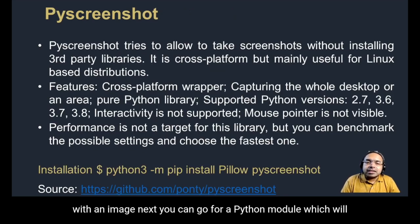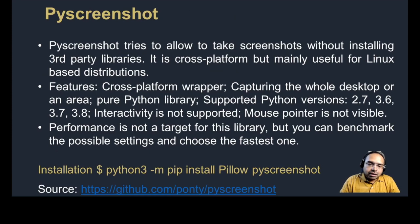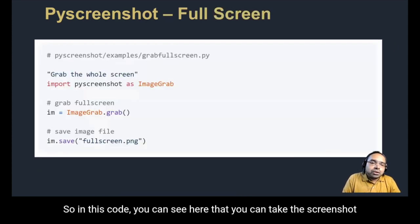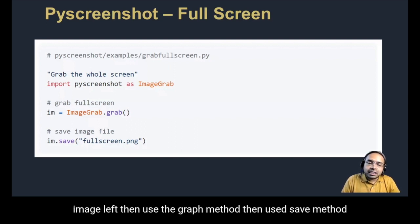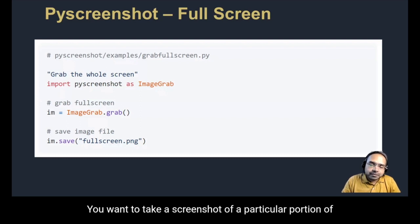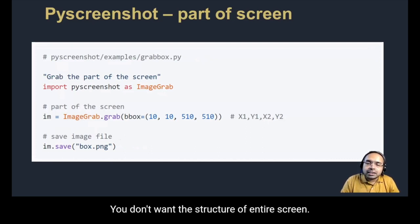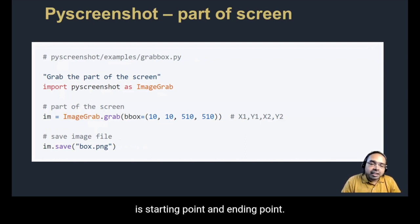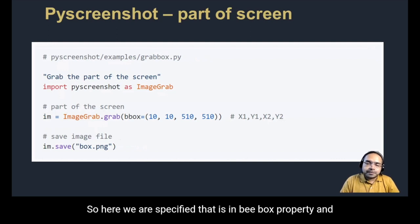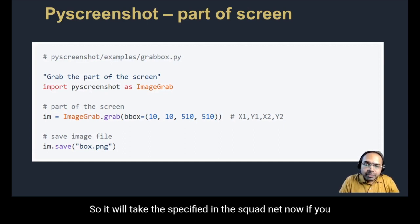You can also use the pyscreenshot module to take screenshots programmatically without installing third-party libraries — it is cross-platform but mainly useful for Linux-based distributions. To take a screenshot of the entire screen, import pyscreenshot as ImageGrab, then use the grab method and the save method specifying the file name. If you want to take a screenshot of only a particular portion of the screen, specify the coordinates x1, y1 and x2, y2 — the starting and ending points — using the bbox property.